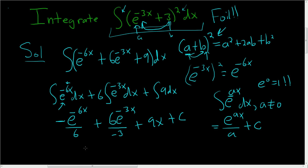Let's go ahead and clean it up. So we end up with negative 1 sixth e to the negative 6x. 6 over negative 3 is negative 2. e to the negative 3x plus 9x plus c. And that is the answer.